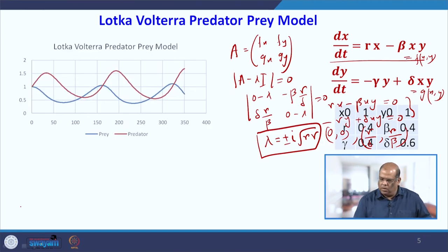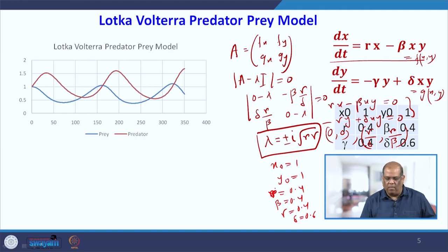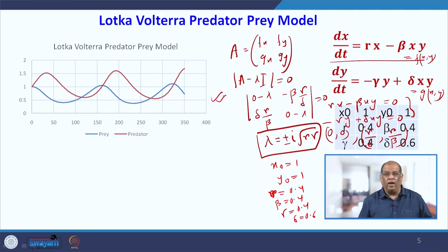If we now look into the numerical solution, the initial values were x₀ = 1, y₀ = 1, R = 0.4, beta = 0.4, gamma = 0.4, and delta = 0.6. If we put these values and solve in Microsoft Excel, we will get a curve where blue is the prey and red is the predator.